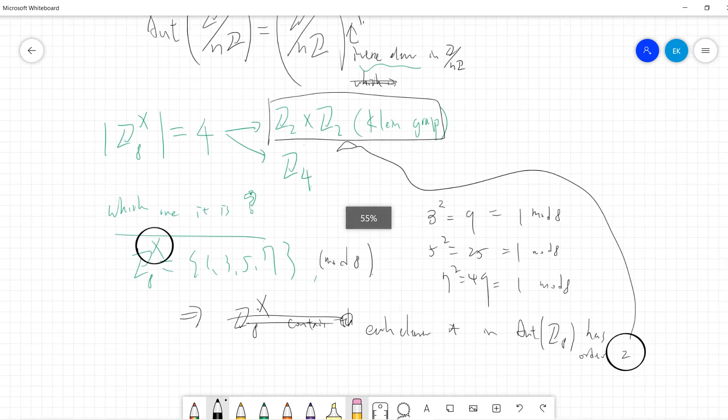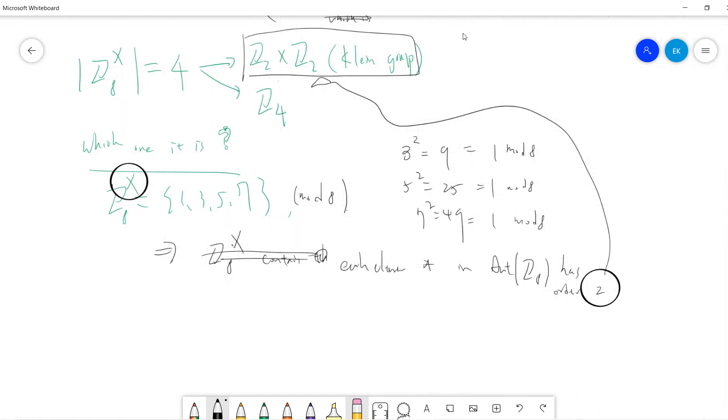Okay, so this is the first good example that the automorphism of the cyclic group is not cyclic.